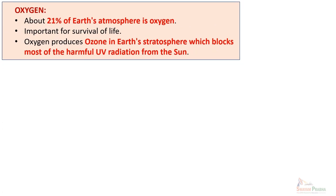The second very important gas is oxygen, constituting about 21% of the earth's atmosphere. It is very important for the survival of life forms. As discussed, until 2.5 billion years ago there was no oxygen in the atmospheric composition, and life as we know it was not possible. Only after the evolution of oxygen did life develop the way it is today on earth. Oxygen also produces a very important gas in the upper layers of the atmosphere — mainly the stratosphere — which we will discuss in coming slides.